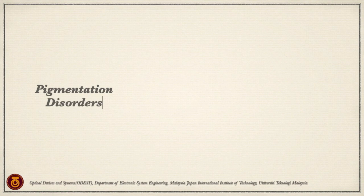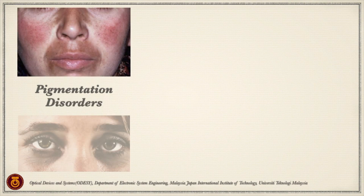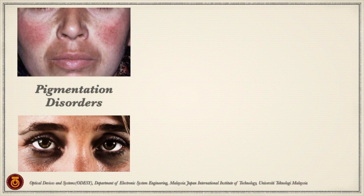Pigmentation disorders such as melasma and dark circles around the eyes are caused by a usually harmless condition in which patches of skin become darker in colour than the normal surrounding skin, due to the excess of dark skin pigment that deposits in the skin.